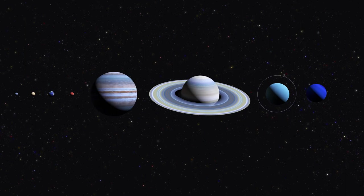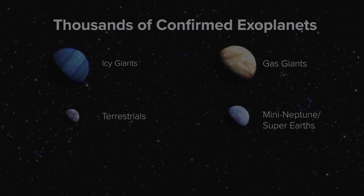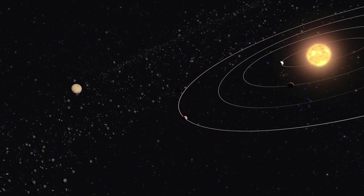Before 1995, we only knew the planets in our own solar system. Now we know of several thousand planets and are likely to discover thousands more. Nearly every star has planets, and at least one in ten has an Earth-sized planet, and some have more than one.